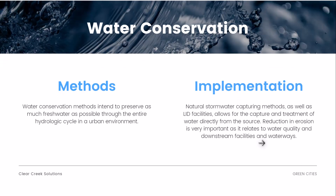Water conservation methods intend to preserve as much fresh water as possible through the entire hydrologic cycle in an urban environment. Instead of allowing stormwater to get polluted and head downstream to a water body, through every part of the process water is being conserved, filtrated, and treated so it can be re-implemented into the natural environment. Natural stormwater capturing methods and LID facilities allow for the capture and treatment of water directly from the source. Reduction in erosion is also very important as it relates to water quality and downstream waterways.